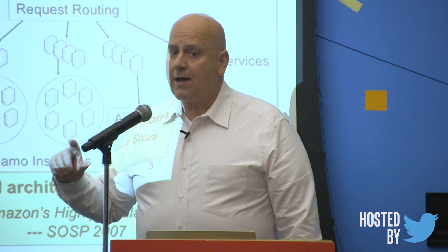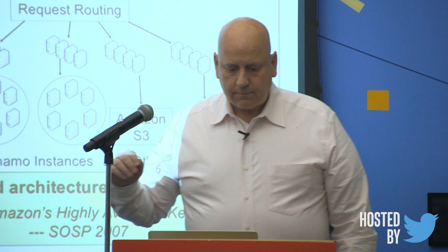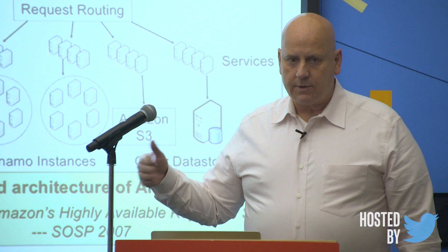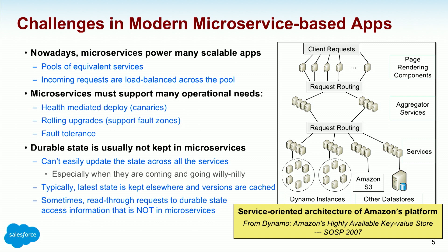Microservices are phenomenal for health-mediated deploys and canaries. Rolling upgrades, fault zones, fault tolerance — they're good. Durable state is not usually kept in microservices because you can't easily get that state atomically updated, especially when these things are coming and going and crashing and restarting. Typically the latest state is kept elsewhere, versions are cached, and sometimes you read through requests to the place you kept it — like going back down to Dynamo instances to get the state you need.